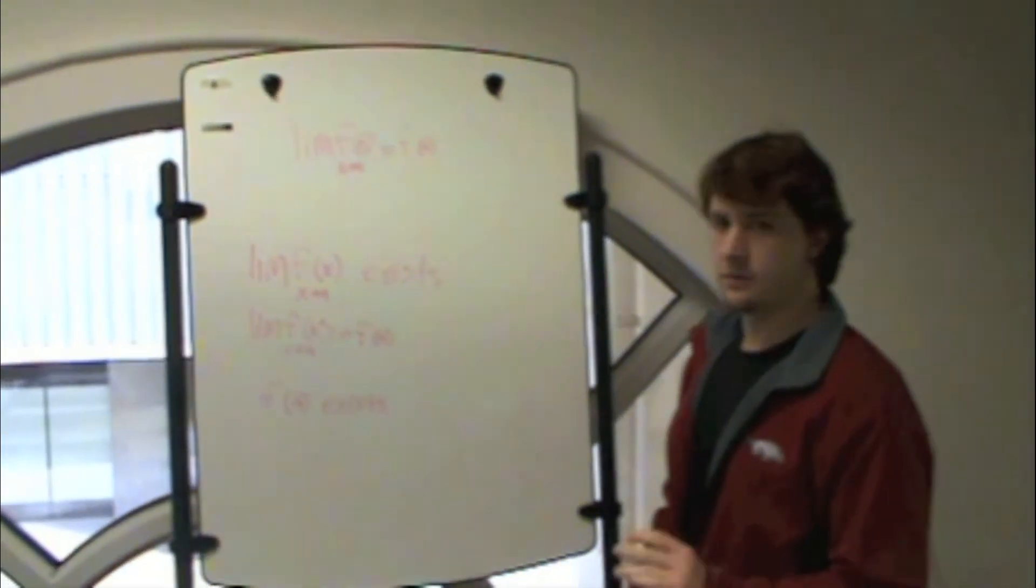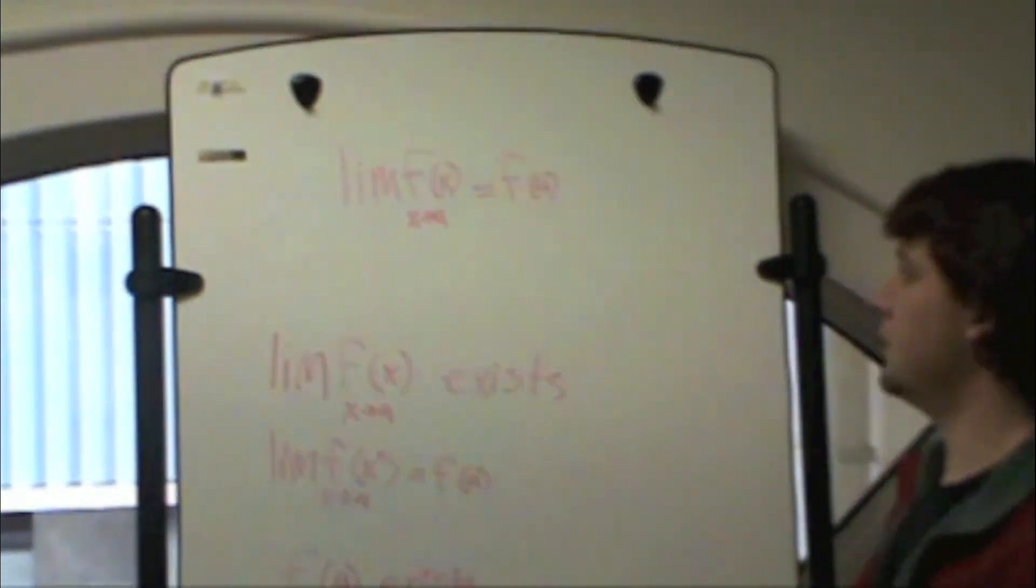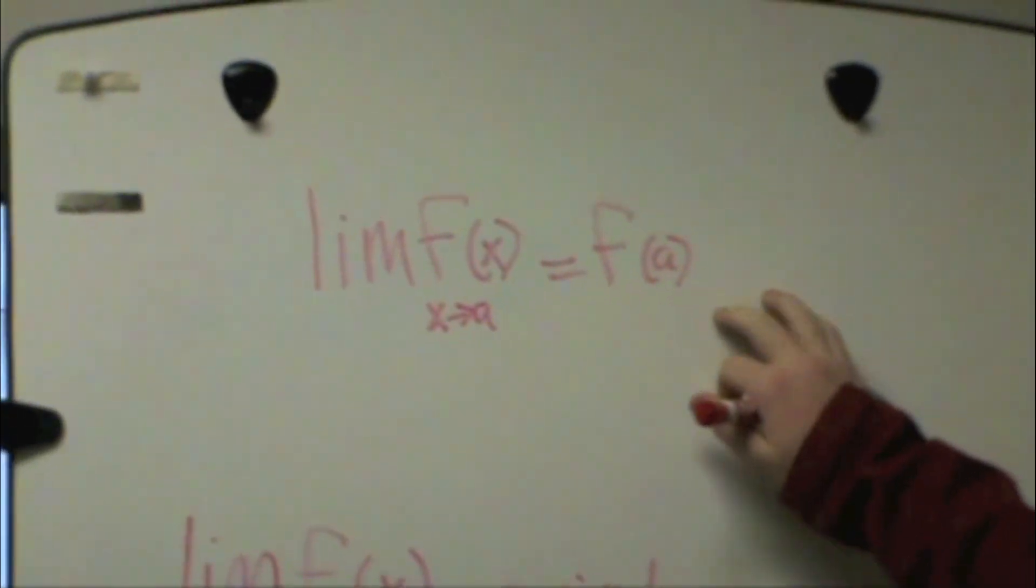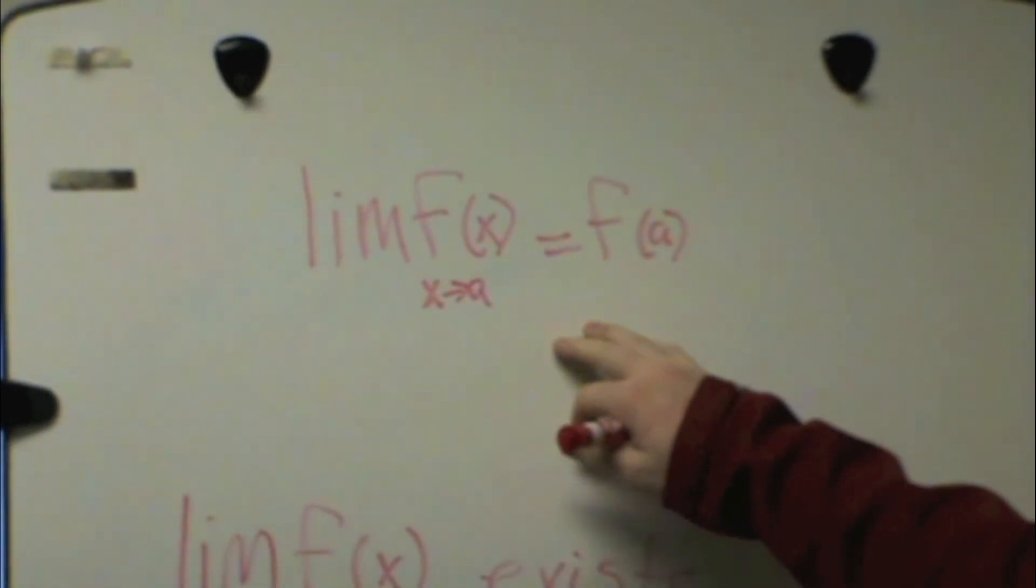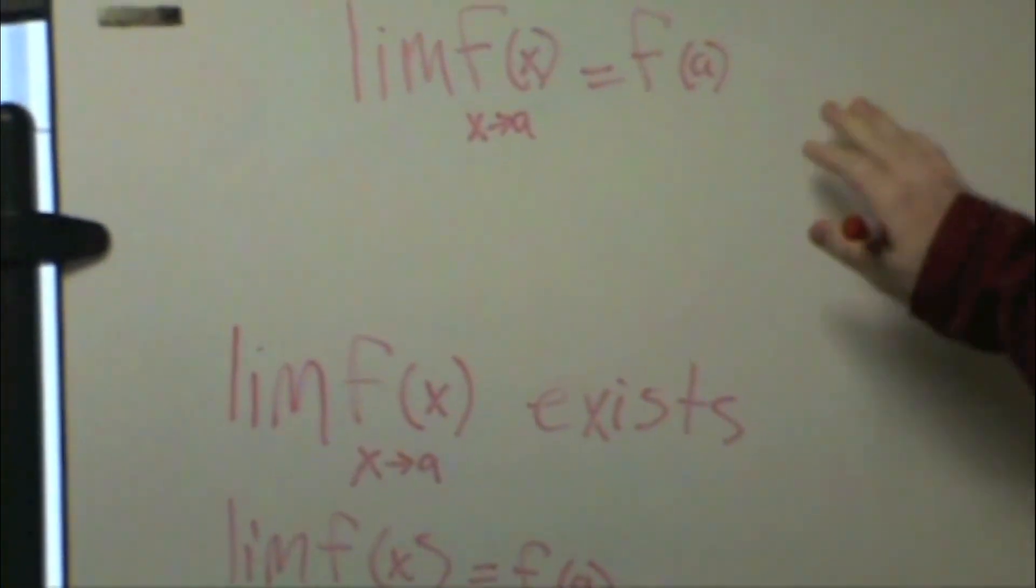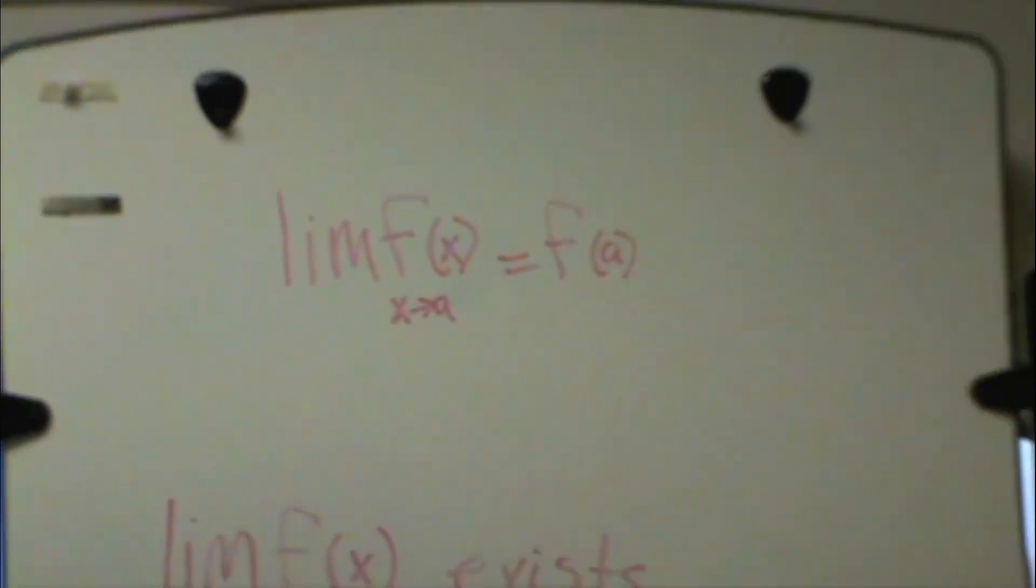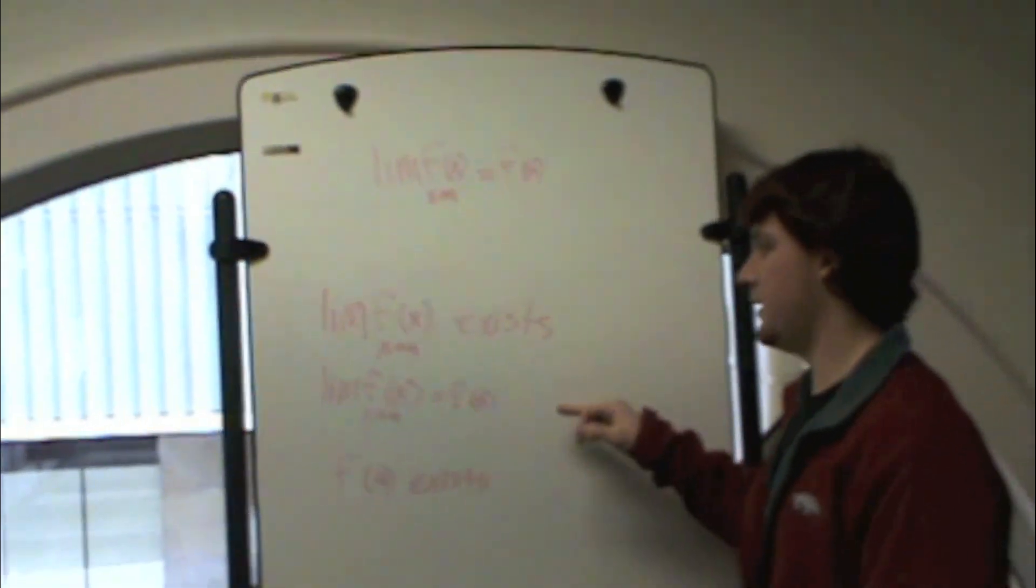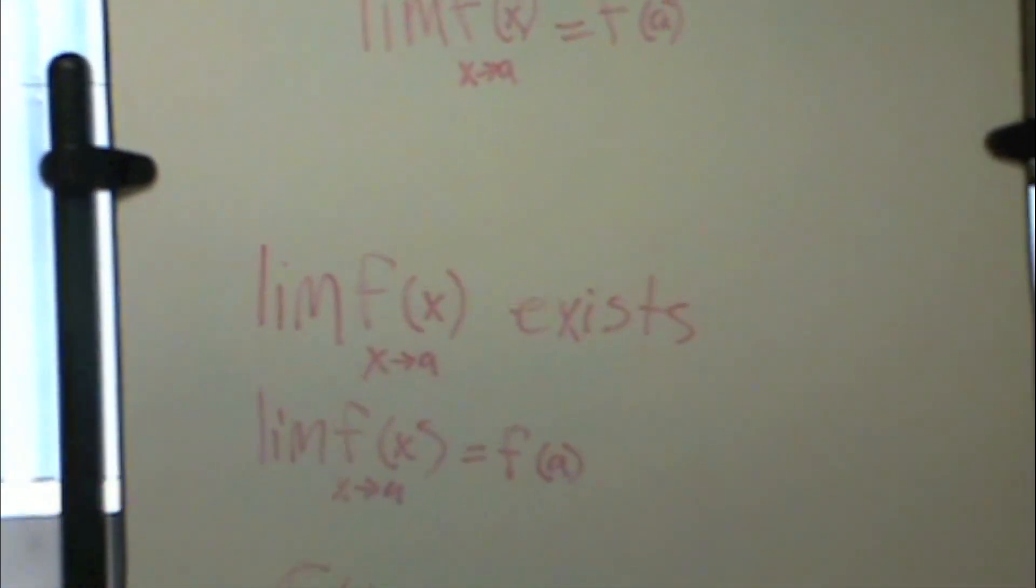Alright, so the things you need to know are the rule for continuity is the limit of f of x as x approaches a equals f of a. That's the definition. To find that, these are the three main things you need to remember. The limit of f of x as x approaches a has to exist.